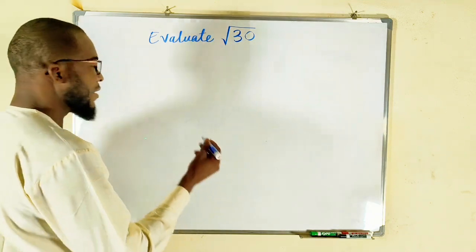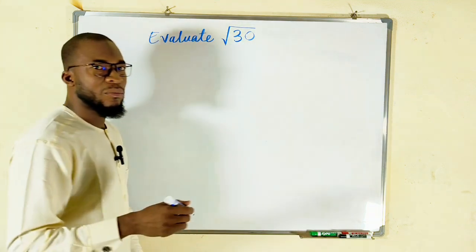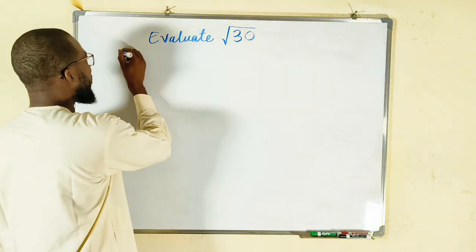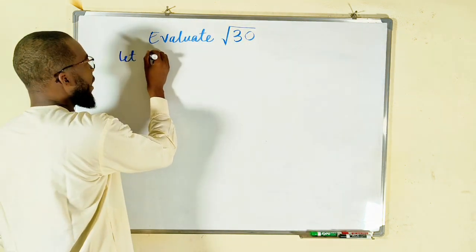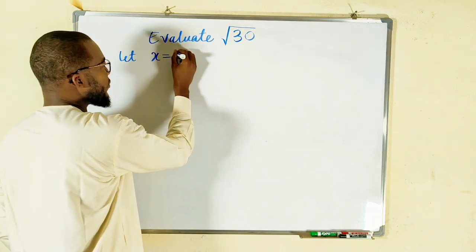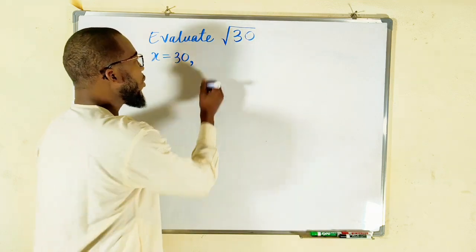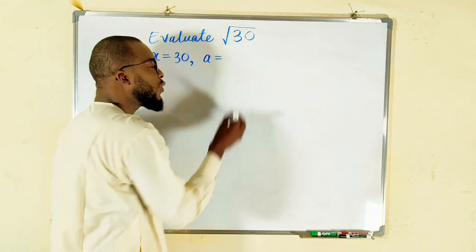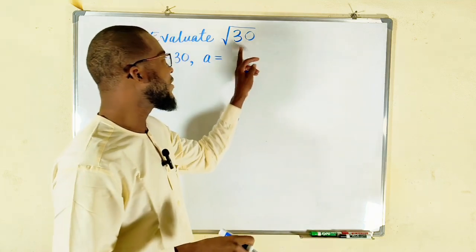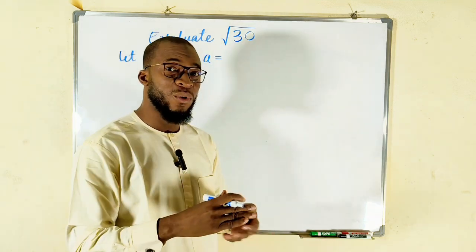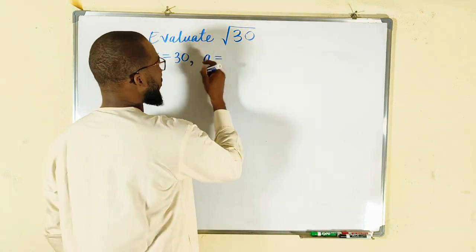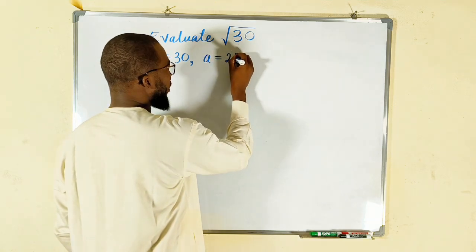Alright, let's get started. I would like to let this number, 30, be equal to x. So let x equal to 30. That's number one. Then we're going to let a be equal to a perfect square number very close to 30, which we know we have 25. So I would like to let a be equal to 25.